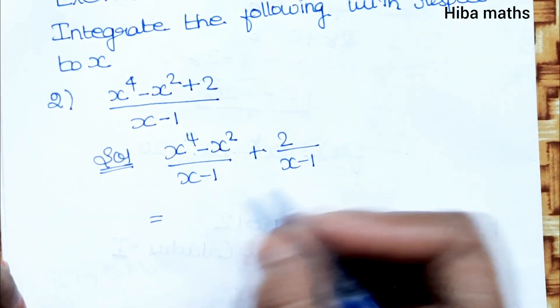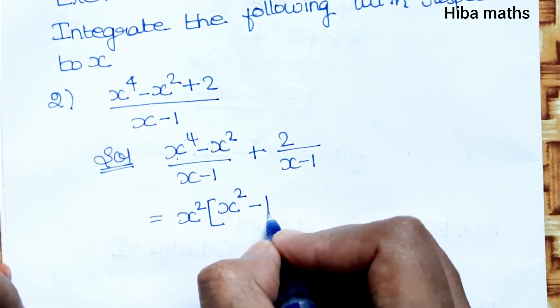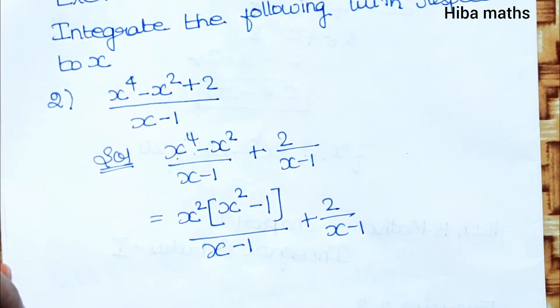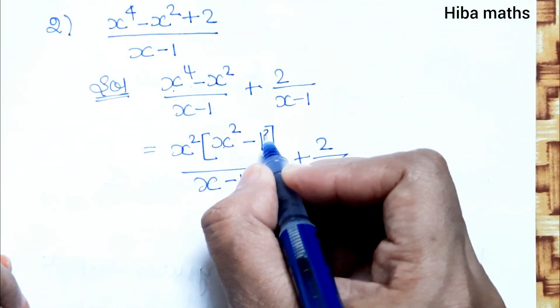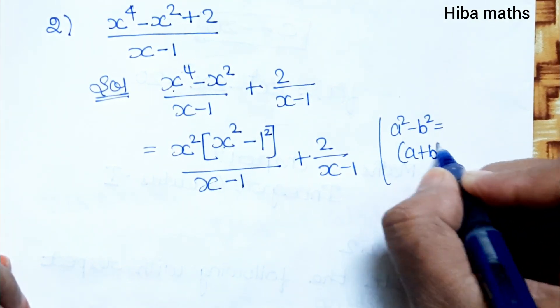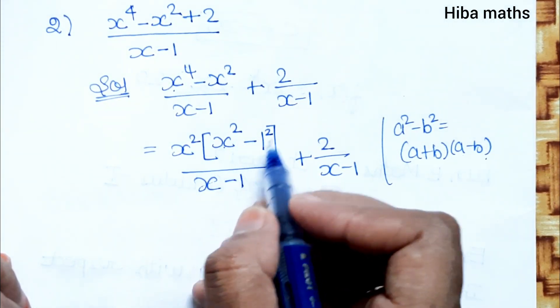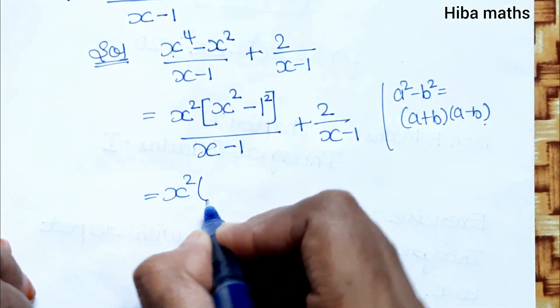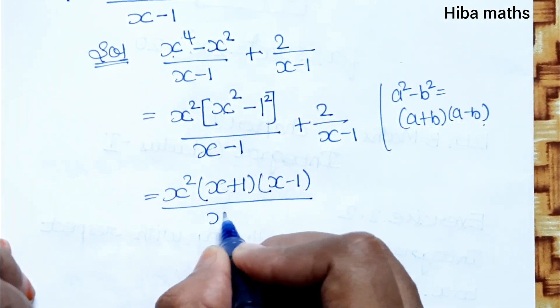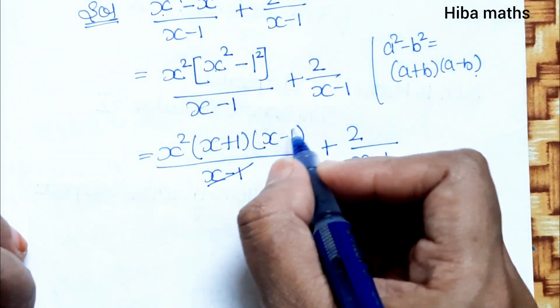Using a^2 - b^2 = (a + b)(a - b), we write x^2 times (x + 1) times (x - 1), divided by (x - 1), plus 2/(x - 1). Now (x - 1) cancels out.